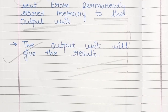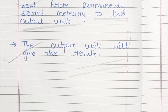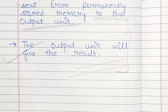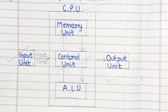That means the computer basically works in three parts: first is the input unit, second is the processing part, and third is the output unit. This means that a computer follows the input-process-output cycle.